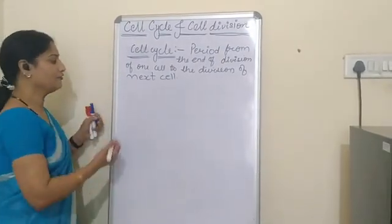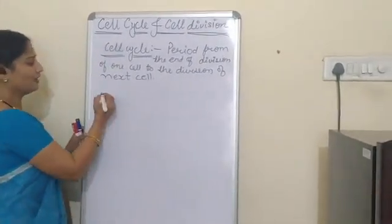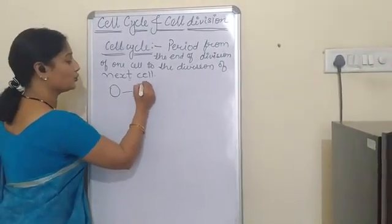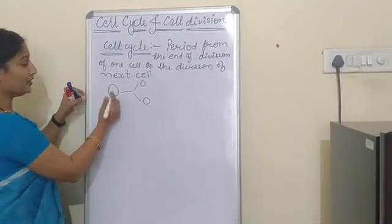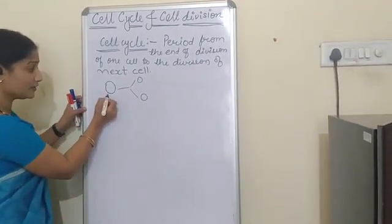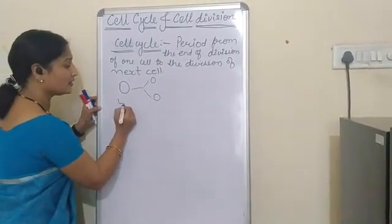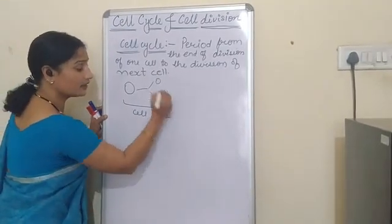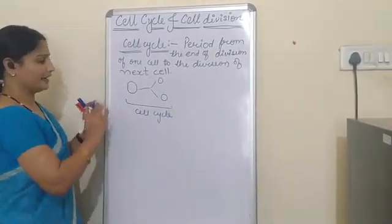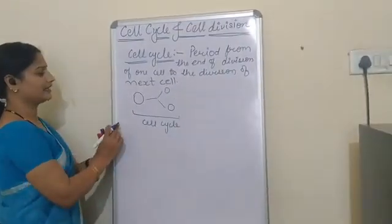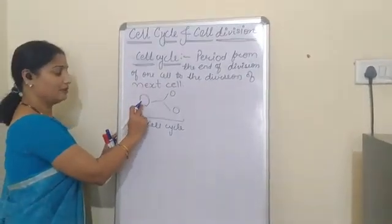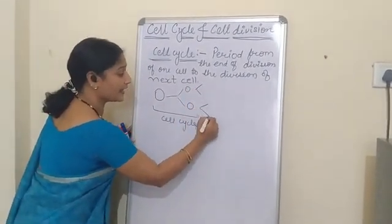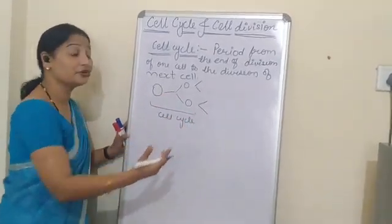In a simple definition, we can say that when one cell starts dividing into two, the event where this cell grows and then starts to divide — the whole of that is called the cell cycle. Simply, one cell matures and divides into two daughter cells, and then those two daughter cells again mature and get ready to divide again.